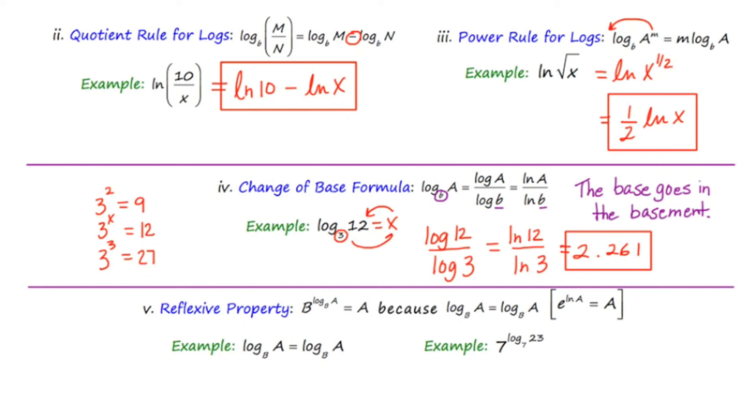All right, let's go to our last property. And I call this the reflexive property. And this says, if you have b raised to the log of a base b, then the answer is just a. So if you ever see this kind of funky looking expression and this value here matches with this value here, then the answer is just going to be this value. And it says here, this happens because log of a base b equals the log of a base b.